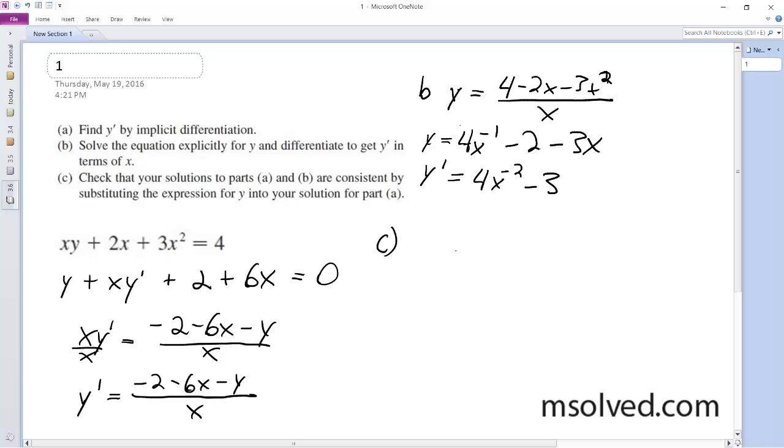Alright, so that means I'm going to plug in part b into part a and we'll see if we get out the same thing. So, alright, so y prime is equal to negative y minus 2 minus 6x over x, which is what I had in part a.